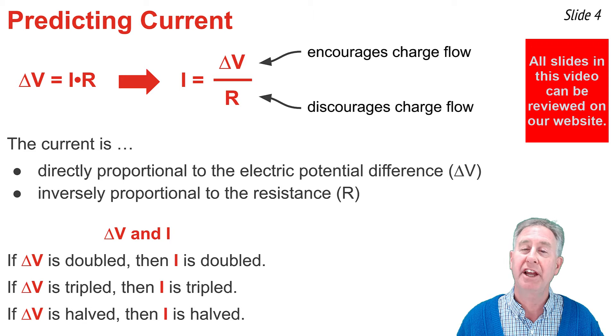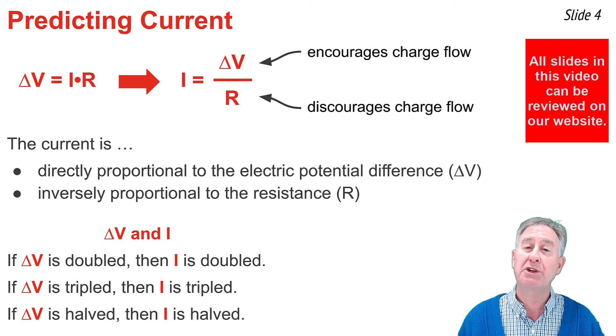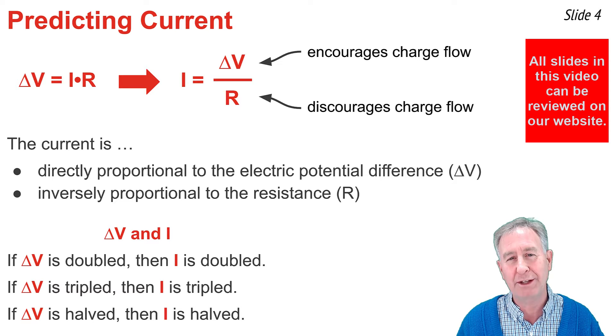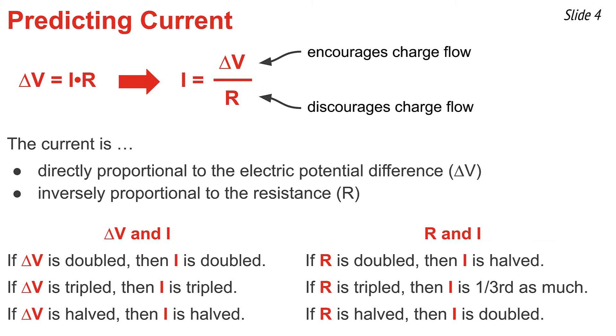When we say that R and I are inversely proportional, we mean that whatever change you make to the resistance, the inverse or reciprocal change is made to the current. In other words, if you double R, you cause the current to be half. If you triple R, you cause the current to be one-third of its original value. And if you halve R, you cause the current to double.